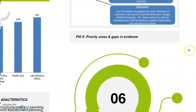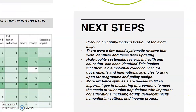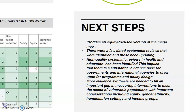The concluding section discusses the next steps. There is a need to produce an equity-focused version of the mega map. A 2020 update for this map has now been completed and the results are being analyzed. For this update, we have also added a COVID-19 tag as a filter to capture reviews and EGMs specifically relevant to pandemic situations and their response measures. High-quality systematic reviews in health and education have been identified, implying there is a substantial evidence base for governments and international agencies to draw upon for program and policy design. More evidence synthesis measuring interventions to meet the needs of vulnerable populations is needed to bridge the gap. Thank you.